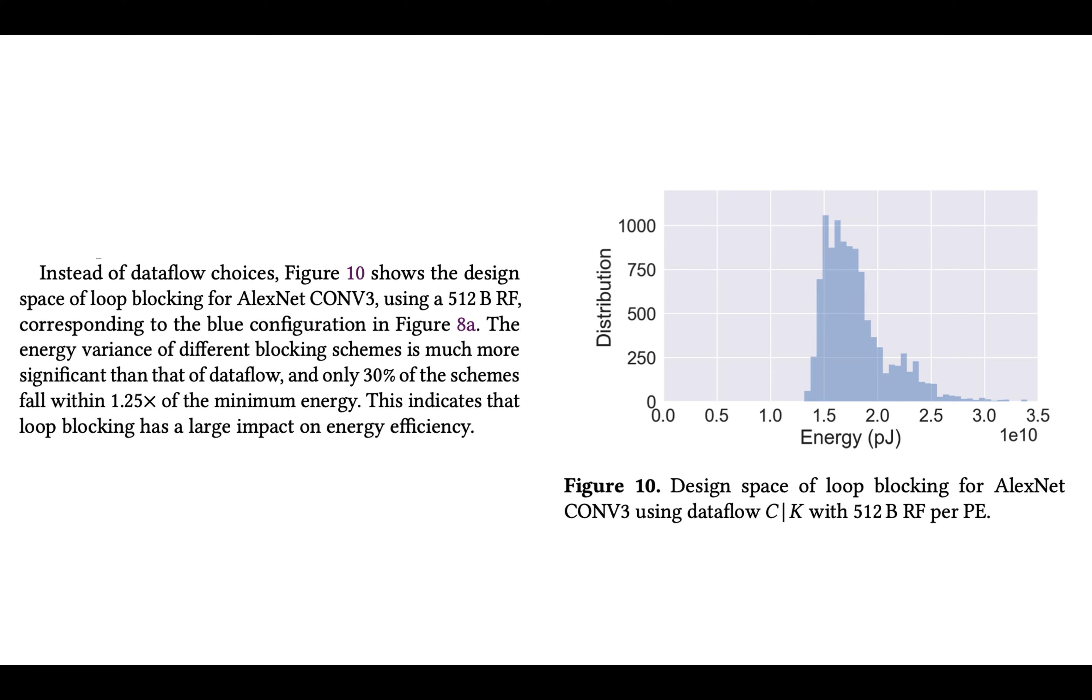So the most common was 1.5 and the lowest looks to be around 1.3-ish, maybe 1.2 or something. And really what they say is that 30% of the schemes, which were selected by a pretty naive sampling, fall within 1.25x of the minimum energy, which to me is saying that really a very high percentage of schemes that look even remotely reasonable get pretty close to being optimal.